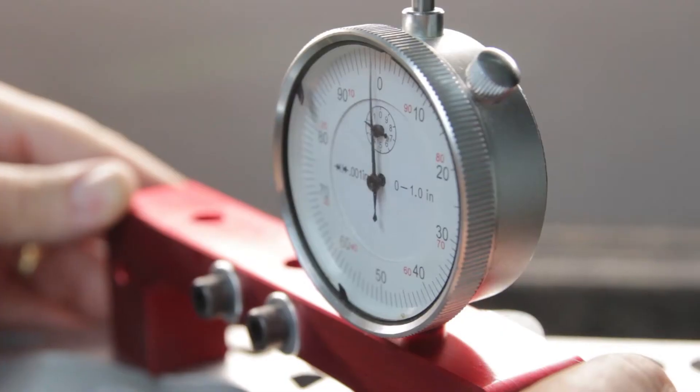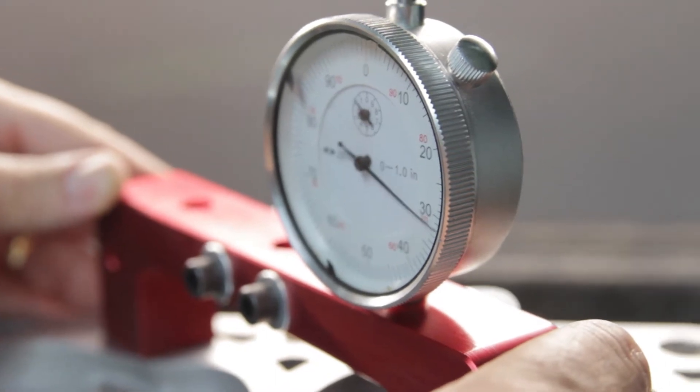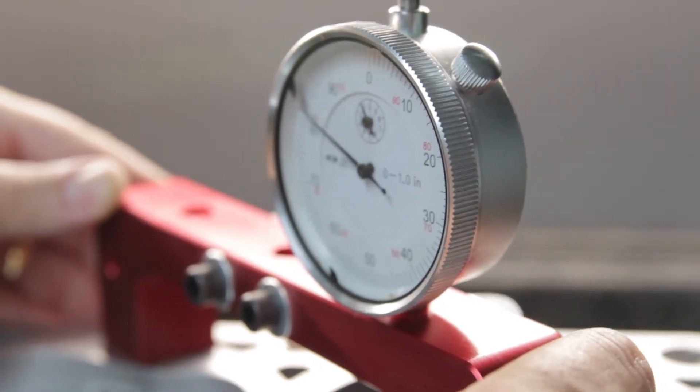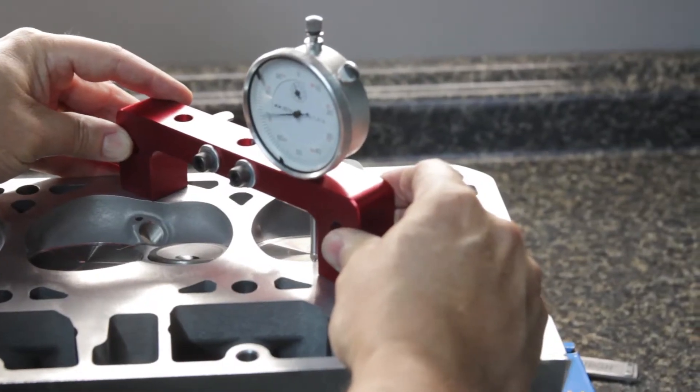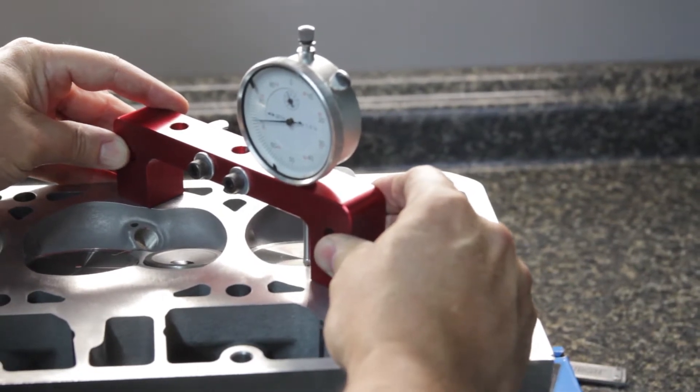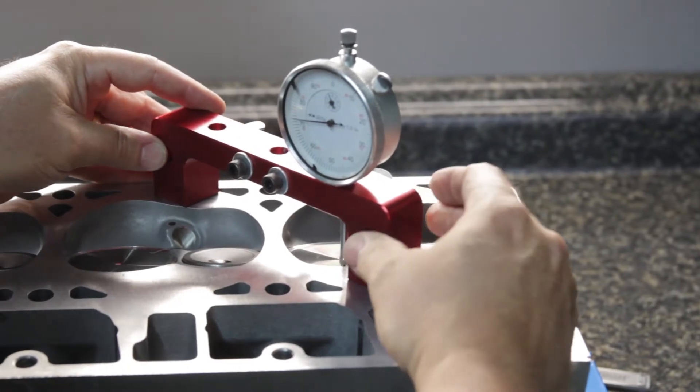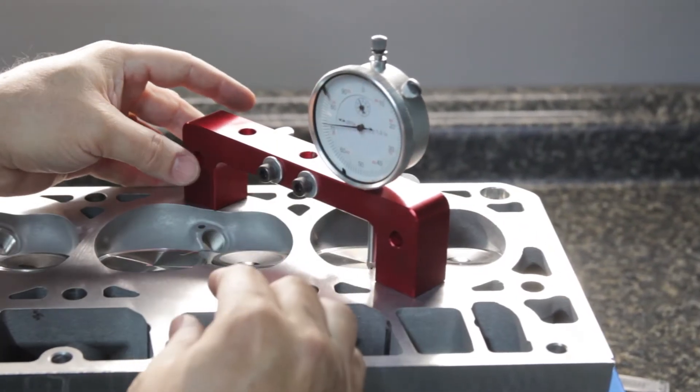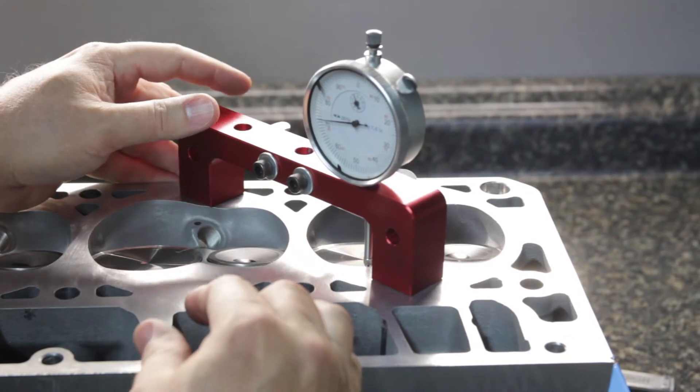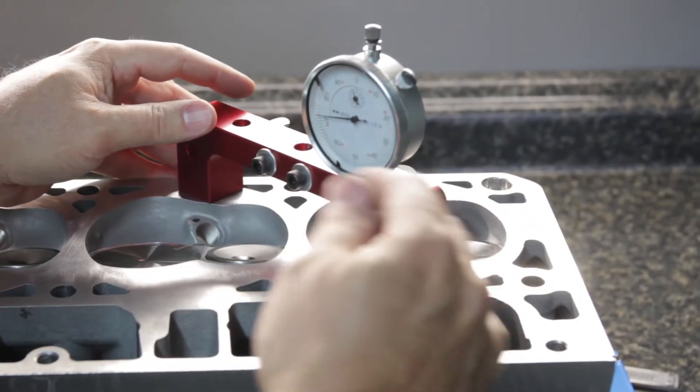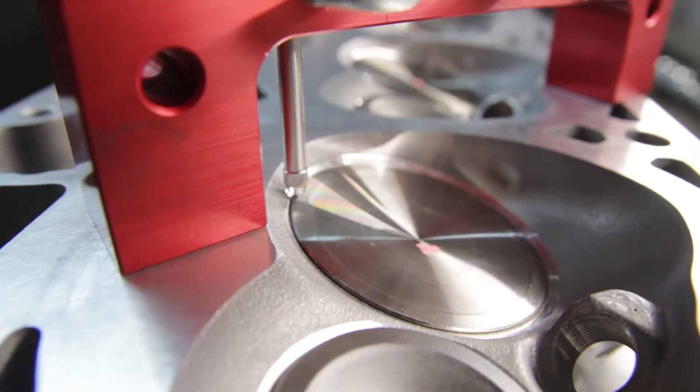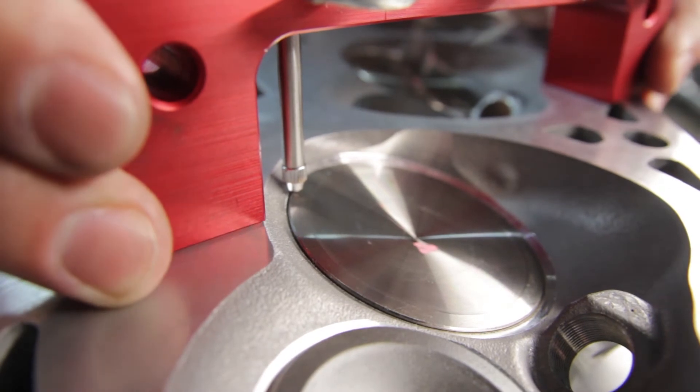You can see it zeroed. We're going to sweep it down to the minimum point of the valve contact. As we sweep across, the closest point is about right there. That's about 128 thousandths free drop or valve drop.